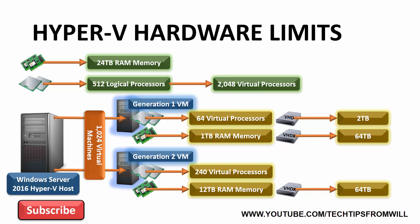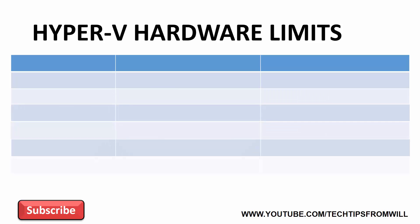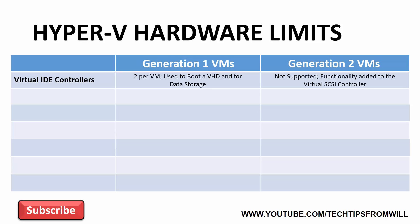Generation 2 virtual machines do not support VHD virtual hard disks. With the basics now covered, let's take a closer look at the virtual hardware supported by Generation 1 and Generation 2 virtual machines. First is the number of virtual IDE controllers. Virtual IDE controllers are only found in Generation 1 virtual machines — they are not supported by Generation 2 virtual machines. Each Generation 1 virtual machine can support up to two virtual IDE controllers, and these cannot be removed nor can more be added. IDE controllers are required by Generation 1 virtual machines in order to boot an operating system from a virtual hard disk. The reason why Generation 2 virtual machines do not support IDE controllers is because this functionality has been added to the virtual SCSI controller instead.